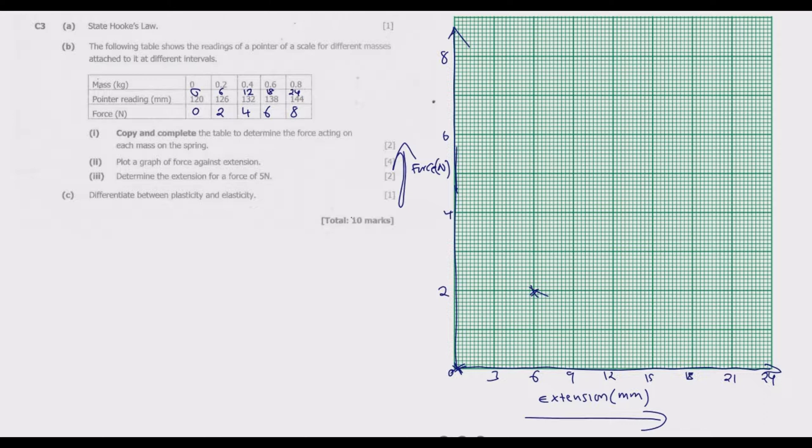Next when the force is 4 newtons the extension is up to 12, somewhere here. Then next it will be 6 newtons at 18, then 8 newtons at 24. Once you do that you can join these points using a straight line like this. This is basically the plot that we are required to do to get the 4 marks.